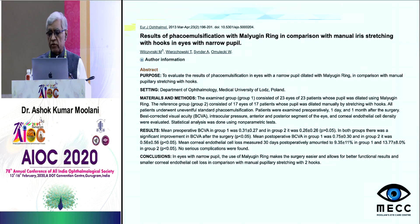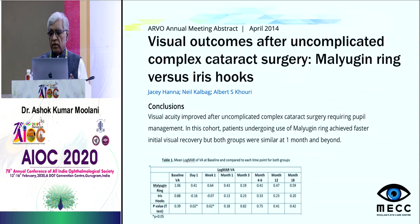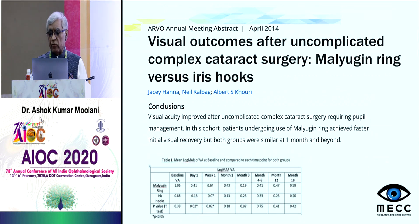Another article from the European Journal of Ophthalmology compared the use of the Malyugin ring and iris stretching hooks in narrow pupils. Results showed that the Malyugin ring made surgery easier with better functional results and less endothelial loss compared to iris hooks. In yet another article from the ARVO meeting in 2014, patients using the Malyugin ring achieved faster recovery compared to those with iris hooks.